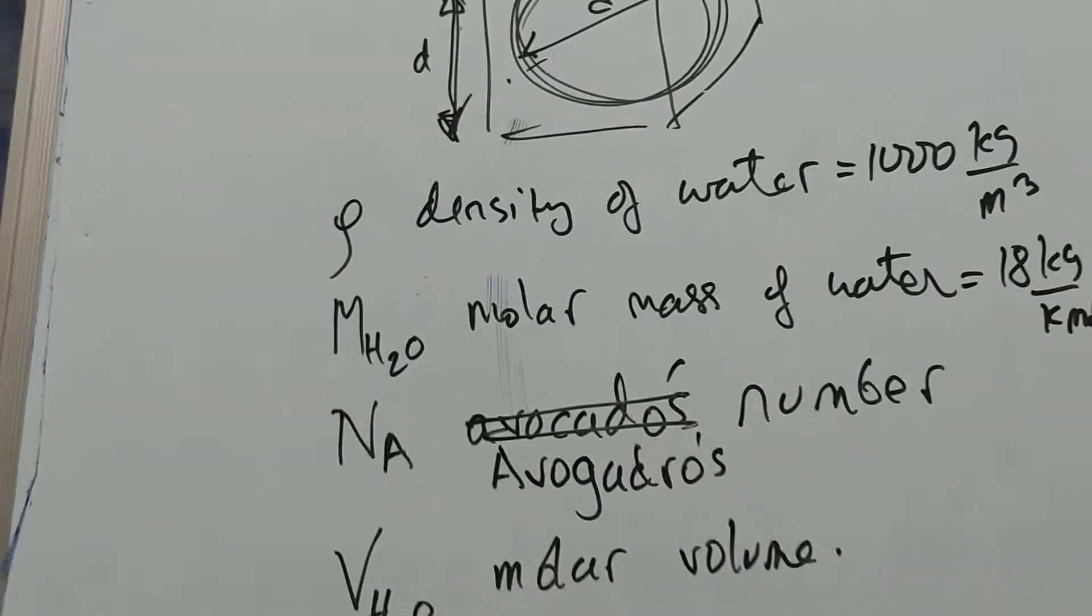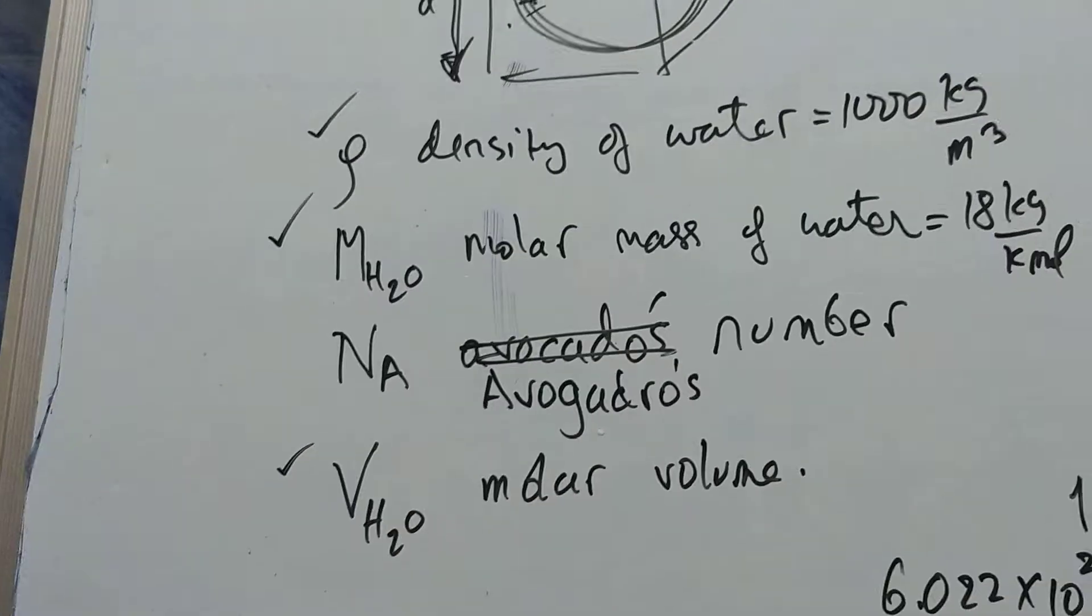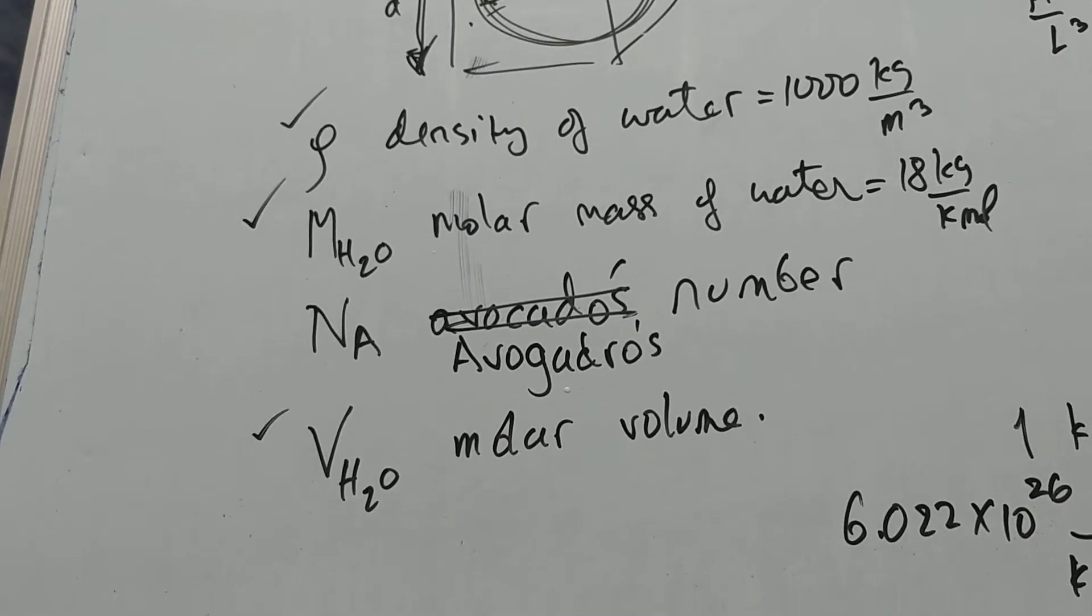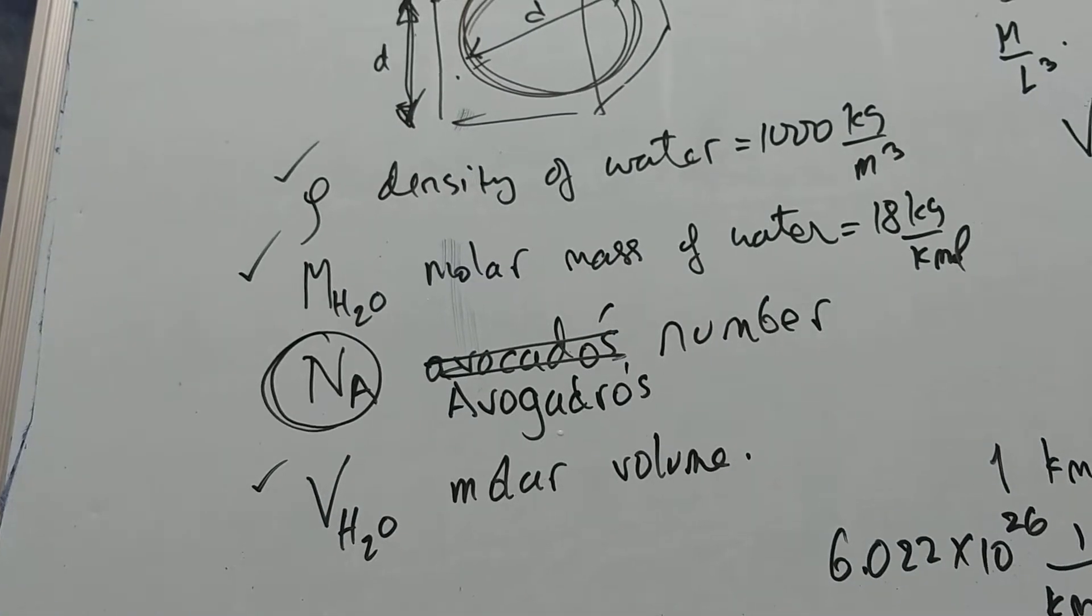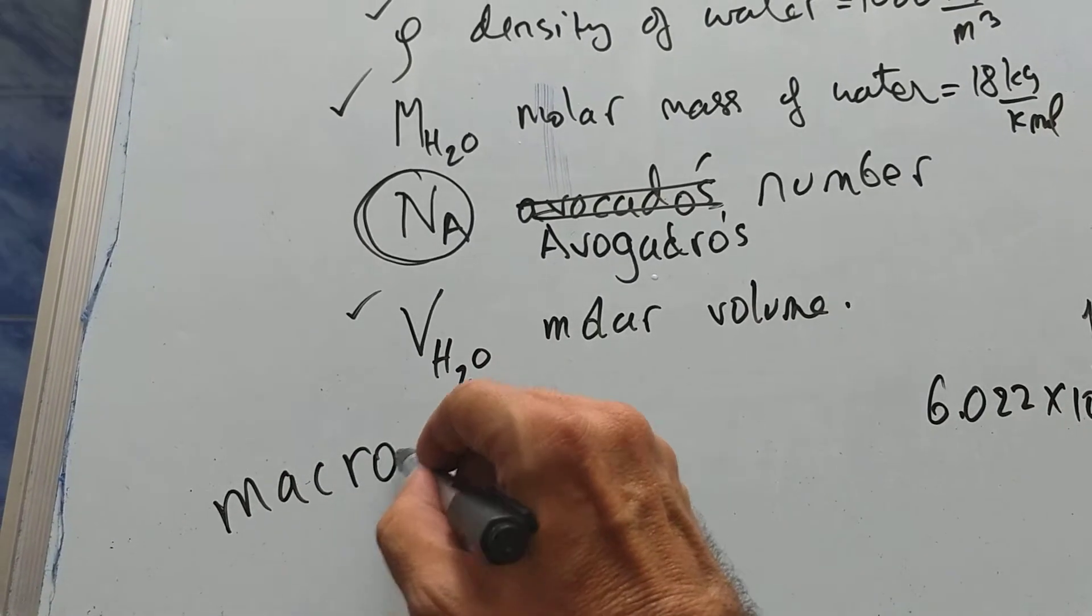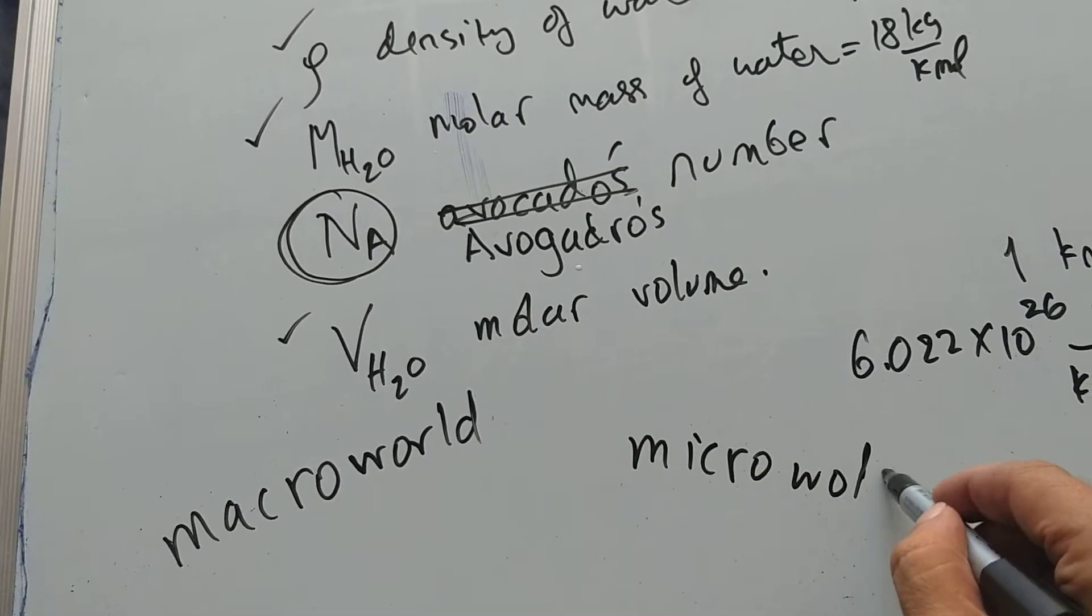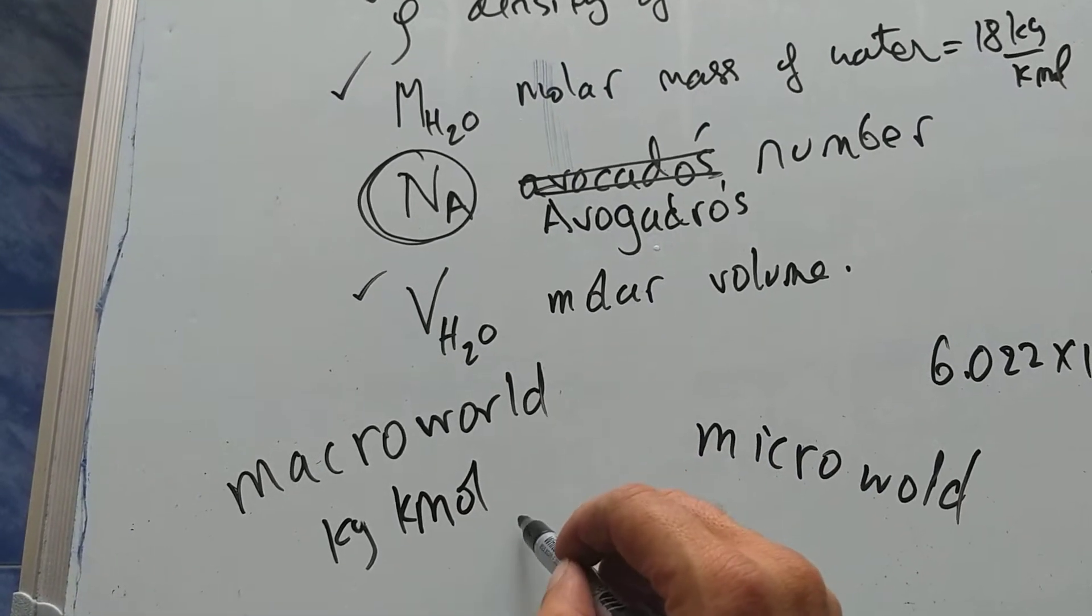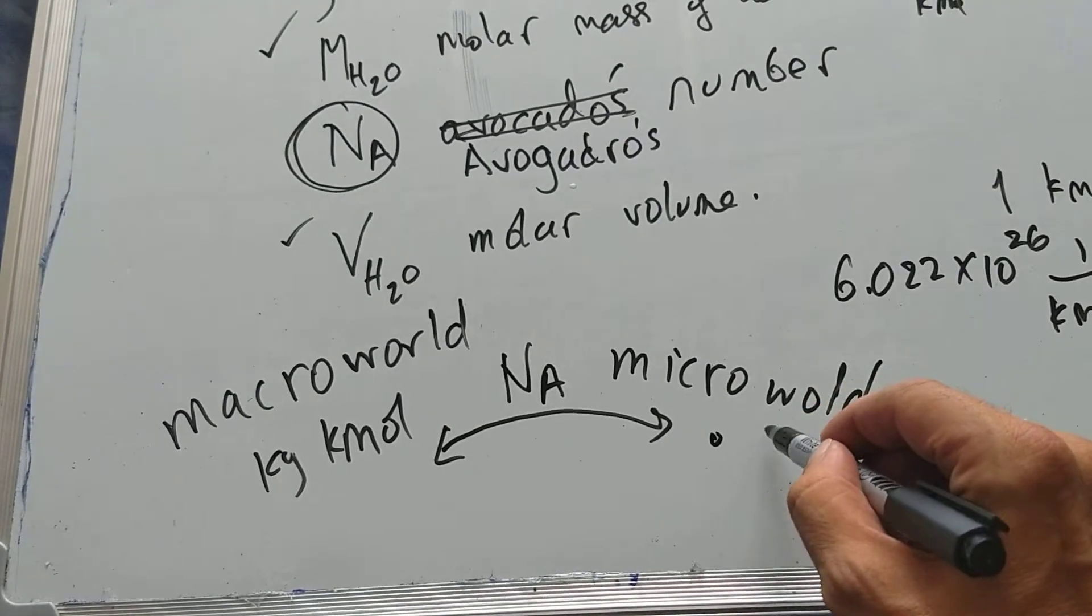We use these macro quantities. These are macro quantities that are used in chemistry. One mole is a lot. It's 18 kilos of water. And we join them together using this Avogadro's number. Avogadro's number joins the macro world, the macro world to the micro world of atoms. You start off with kilograms and moles and kilomoles and density. And you join the macro world to the micro world by Avogadro's number. And you get molecules and atoms.